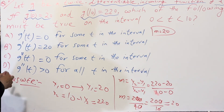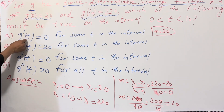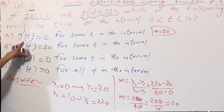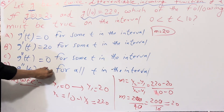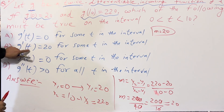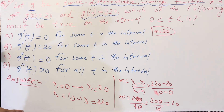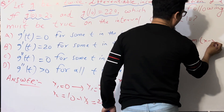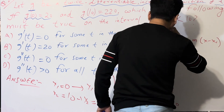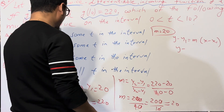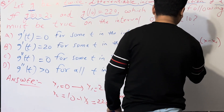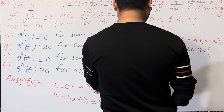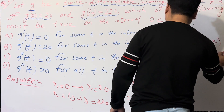Now, G prime of T - whether T is 1, 2, 3, 4, or 5 - gives us the slope at a specific value of time. This is a specific number, not an equation. So G prime at some value of T gives us the slope. Using the point-slope form y minus y₁ equals M times (x minus x₁), with y₁ equal to 20 and M equal to 20.